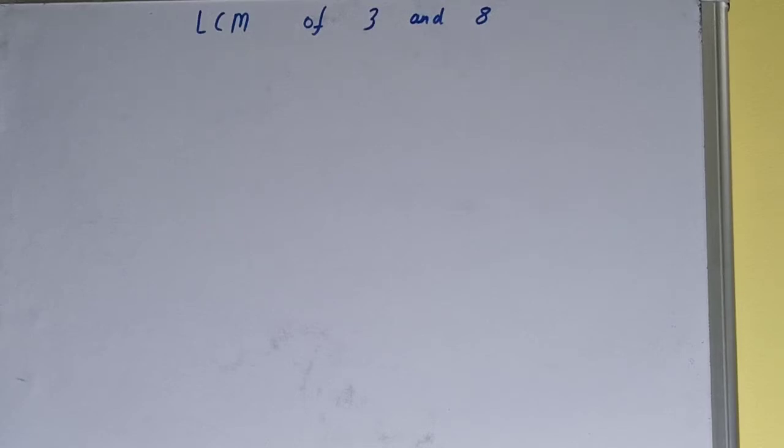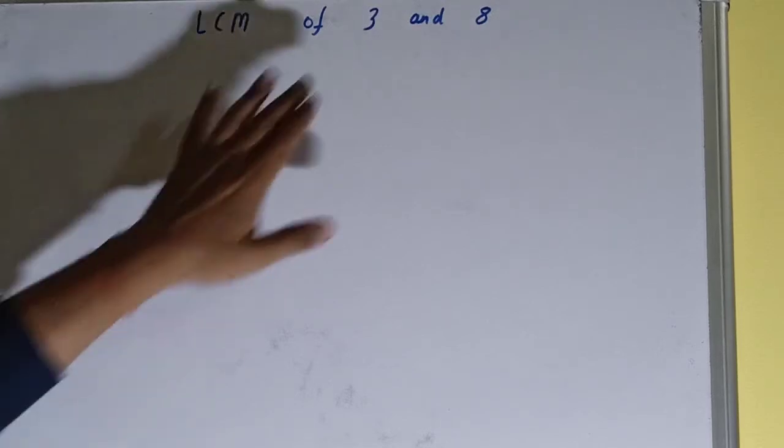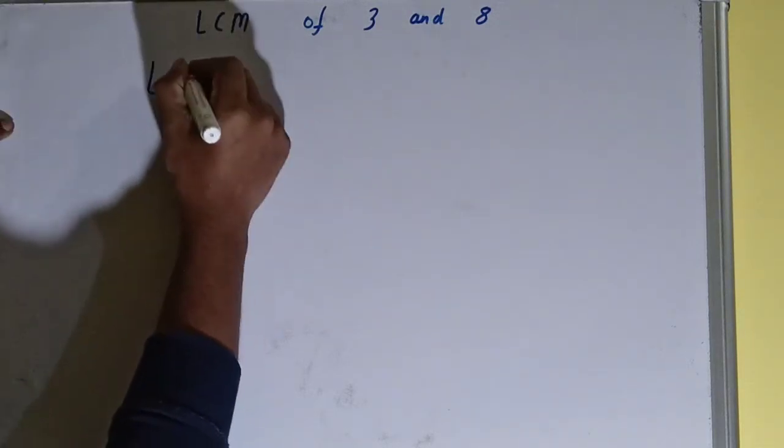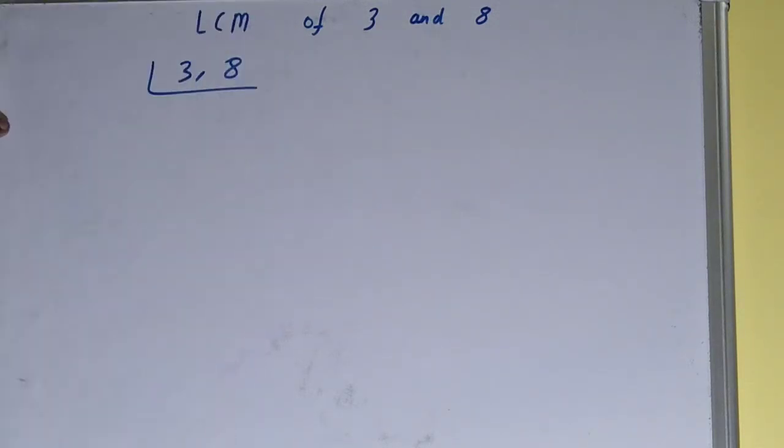Hello friends, and in this video I'll be helping you with the LCM of the numbers 3 and 8. So let's start. To find it out, you need to write both the numbers like this: 3 comma 8.